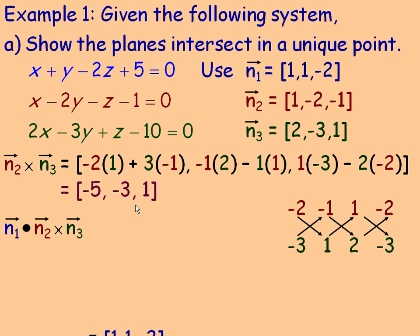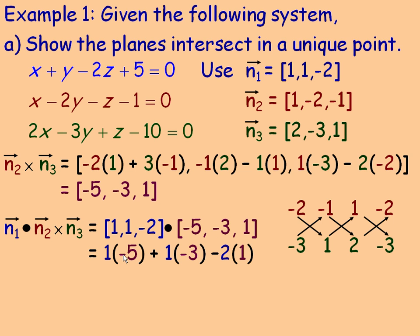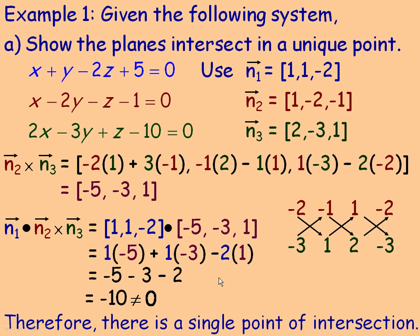Now we take the dot product of that cross product with the first normal vector n1 = (1, 1, -2). So (1)(-5) + (1)(-3) + (-2)(1) = -5 - 3 - 2 = -10. That is not zero, and any non-zero value means there is a single unique point of intersection. If it had equaled zero, that would mean no intersection or a line of intersection.